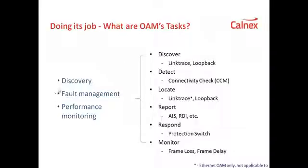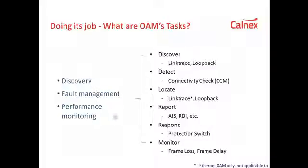OAM has three broad categories of work: discovery, fault management, and performance monitoring. It uses messages — specific OAM packets that are sent into the network — such as connectivity check, link trace, loopback, and so on. These messages perform the three broad categories of tasks: discovery, fault management, and performance management.